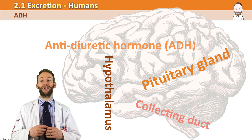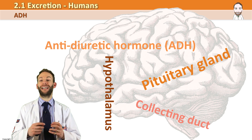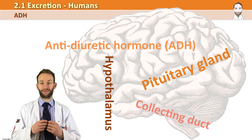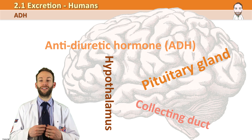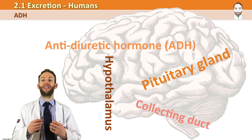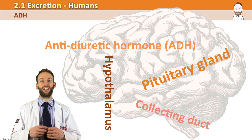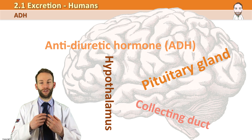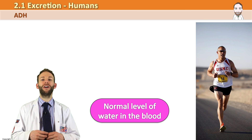The anti-diuretic hormone, or ADH, travels in your blood to your kidney, where it will then act on the collecting duct — either telling the collecting duct to reabsorb more water back into the blood, or to keep the water in the nephron to be excreted.